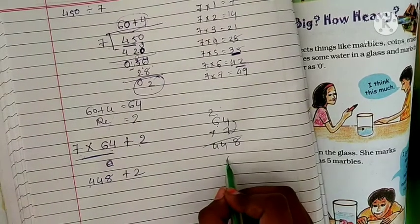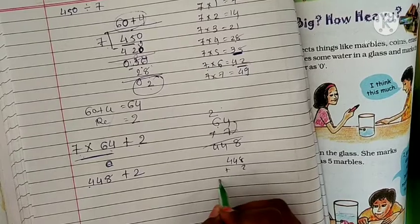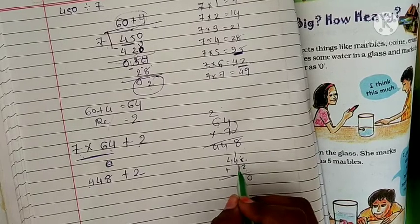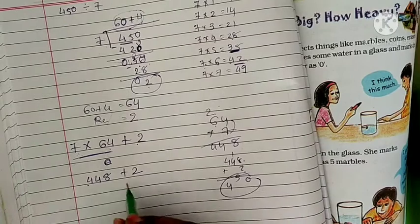Answer is 448 plus 2 is 450. 1 plus 4 is 5, 4. Answer is right.